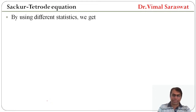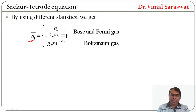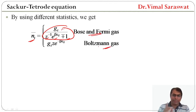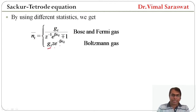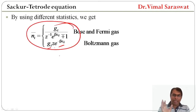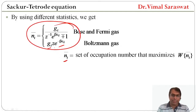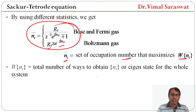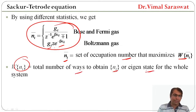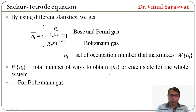By using different statistics, we get n_i bar equal to g_i divided by (z^(-1) * e^(beta * e_i) ± 1). This is the expression for Bose-Einstein and Fermi-Dirac statistics. If the gas is Boltzmann's gas, then n_i bar equals g_i * z * e^(-beta * e_i). This expression was determined in our last lecture, and the link is given in the description box. Here n_i bar is the set of occupation numbers that maximizes W(n_i), where W(n_i) is the total number of ways to obtain n_i eigenstates for the whole system.